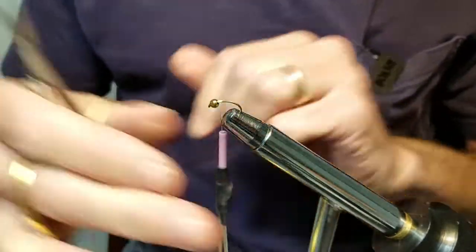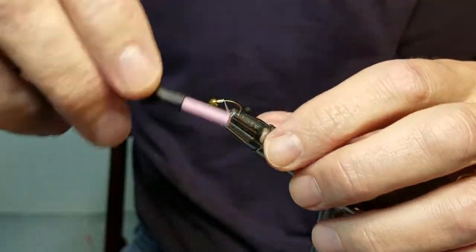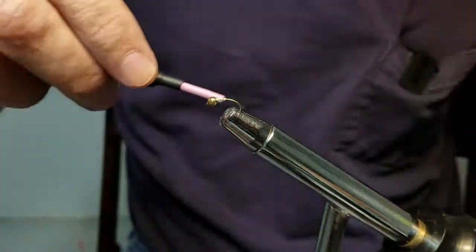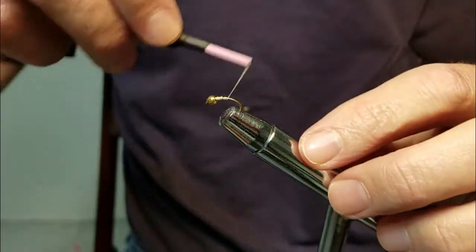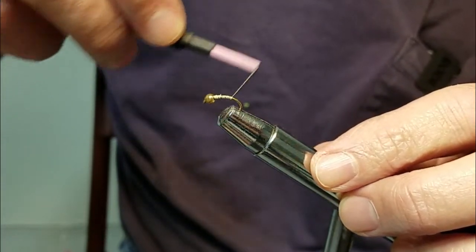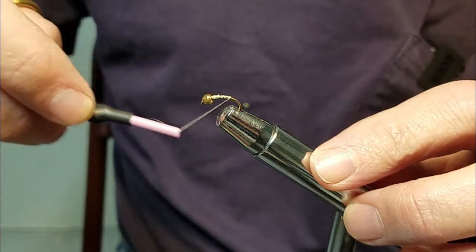This guy is really tight. All you need is some caddis dubbing, like a flashy caddis dubbing, and a little bit of red floss, about a two-foot strip of red floss.